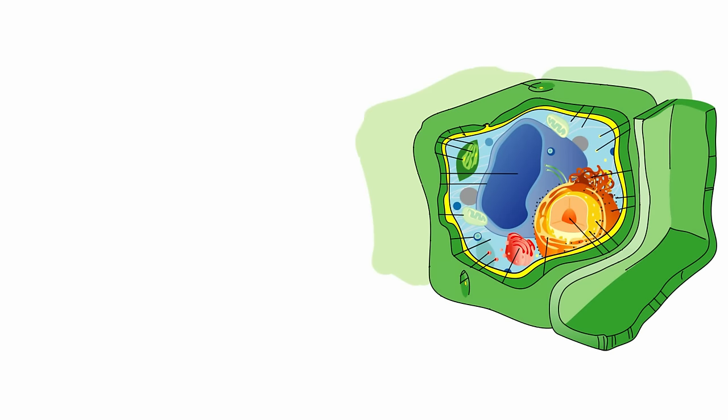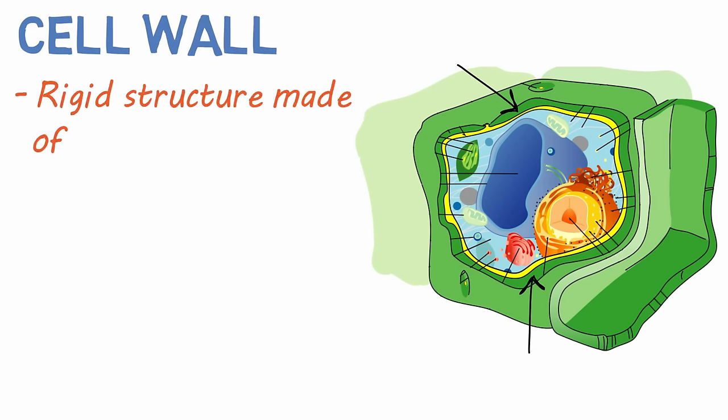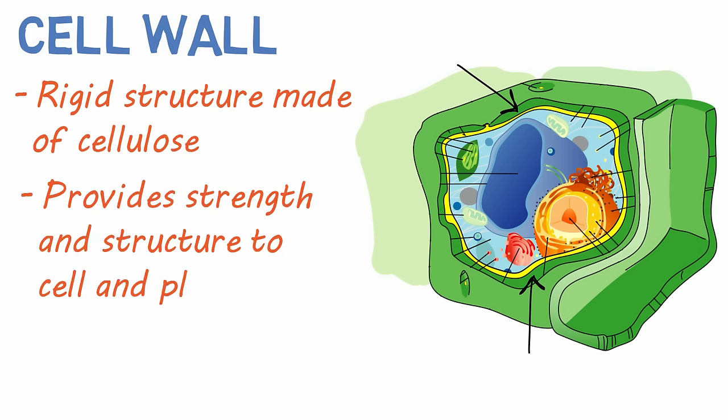Let's go through the major structures of the plant cell and touch briefly on the function of each. We'll start on the outside with the cell wall. The cell wall is a rigid structure made of cellulose that provides strength and structural support to the cell and plant as a whole.